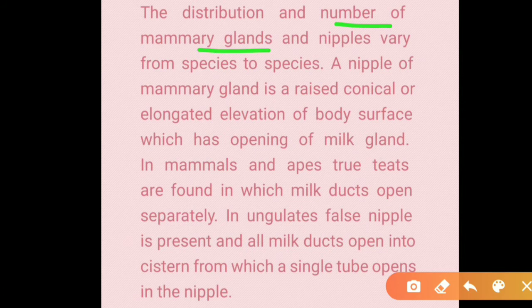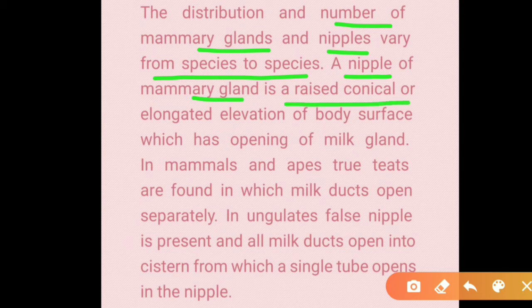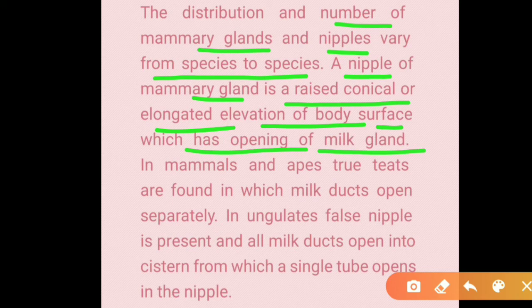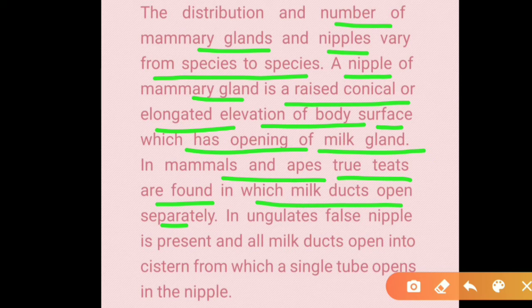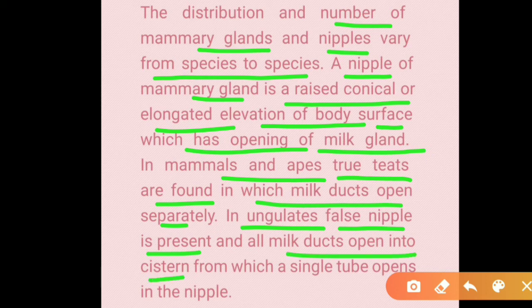The distribution and number of mammary glands and nipples varies from species to species. A nipple is a raised, conical, elongated elevation of the body surface with the opening of milk glands. In mammals and apes, true teats are found in which milk ducts open separately. In ungulates, false nipples are present and all milk ducts open into cisterns from which a single tube opens into the nipple.